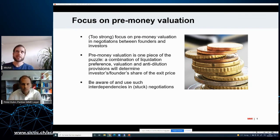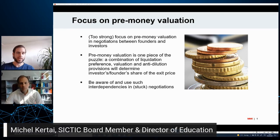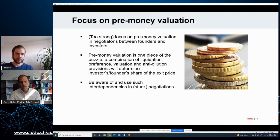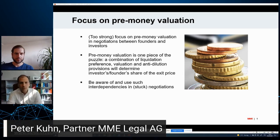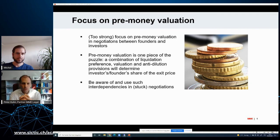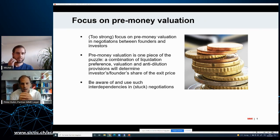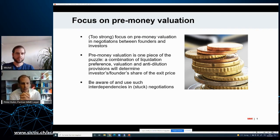The pre-money valuation is a very relevant factor. But when we look at the final allocation of the exit proceeds, such final allocation is the result of a combination of the pre-money valuation, the liquidation preference, and the anti-dilution provisions. Investors and founders should be aware of those correlations and not look at those provisions in isolation, but understand how they are connected.